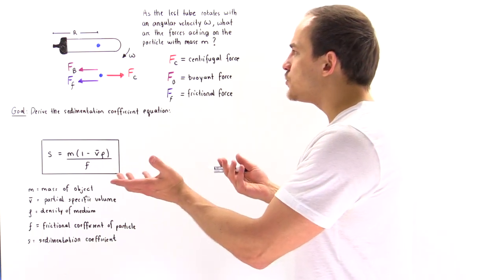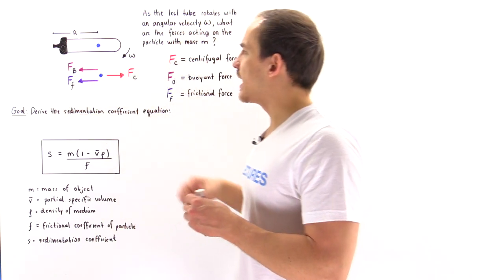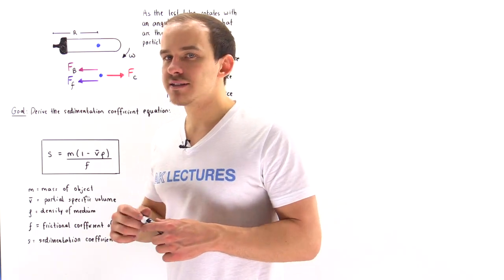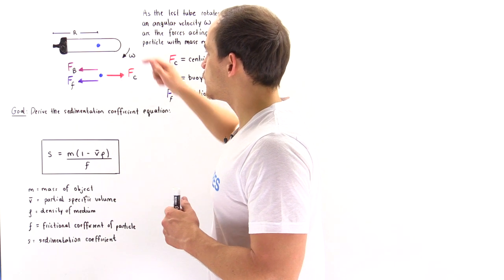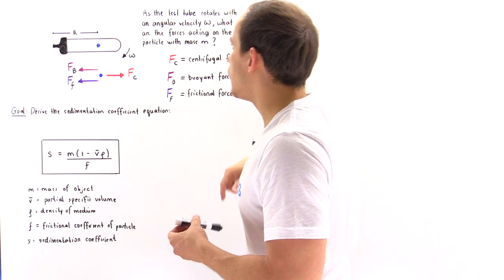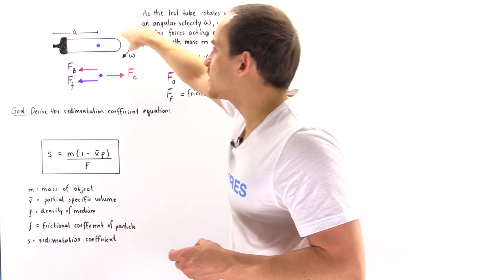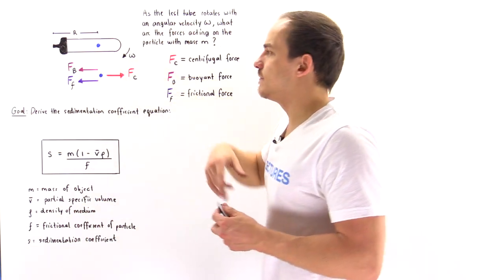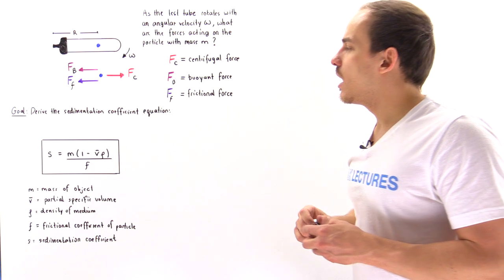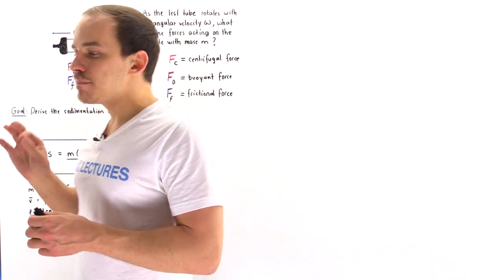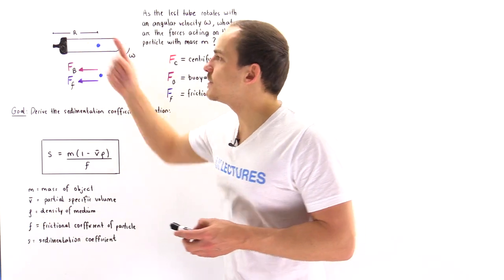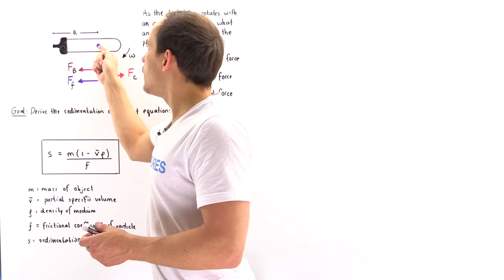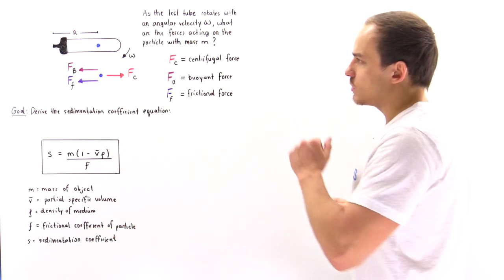Let's begin by imagining our picture — what is taking place within our test tube as it rotates with some angular velocity. The blue particle is some particle of mass m, and the entire test tube is rotating with a given angular velocity omega.